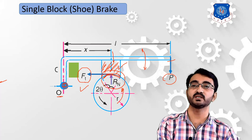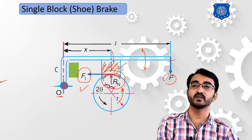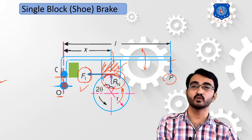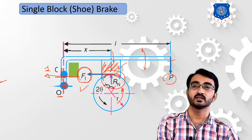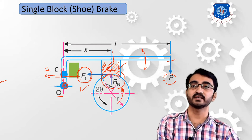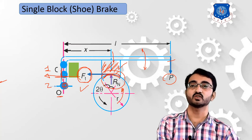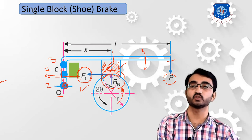We consider three different positions of the fulcrum point O relative to the frictional force line: first, where the frictional force passes through the center of the fulcrum point; second, where the fulcrum point is below the friction lining; and third, where it is above the friction lining. From these three cases we derive three equations for single shoe brakes.